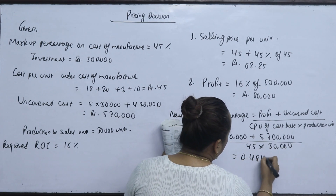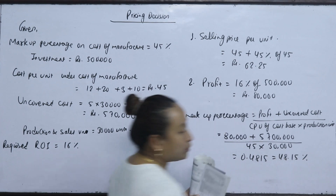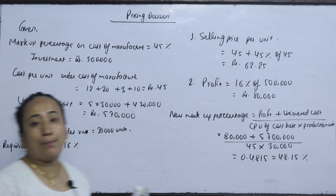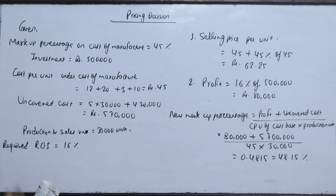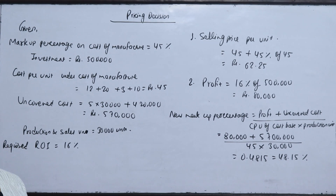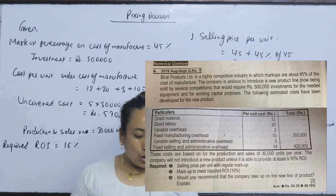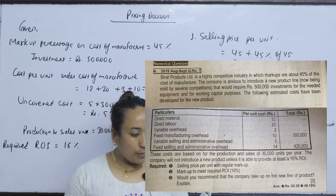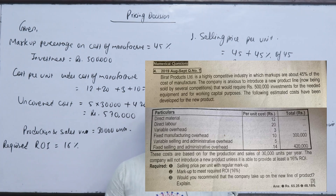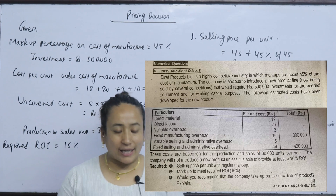The new markup percentage is 48.15%. This is the markup on manufacturing cost required to meet the desired 16% ROI. Part three: Would you recommend that the company take up the new line of product? Explain.